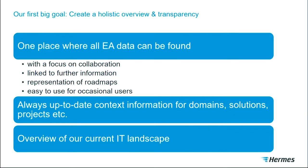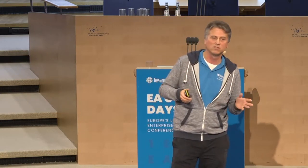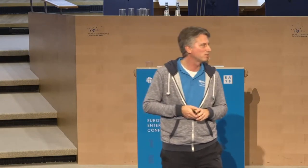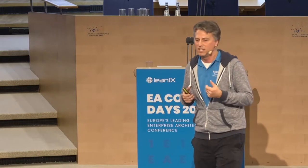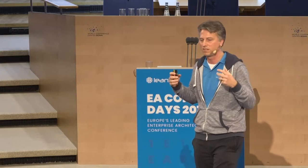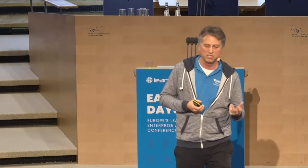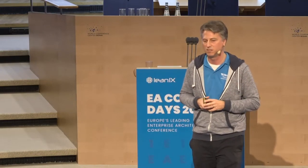So our EAM approach: the first big goal was one place where all EA data can be found — not every detail for every application, but a more holistic view. You have applications with names and key information, and if you want to go deeper you follow a link to a wiki or ask the responsible person. With a clear focus on collaboration — we don't want to manually enter every piece of data, but the product owners, solution owners, and data architects should be able to edit their own data.